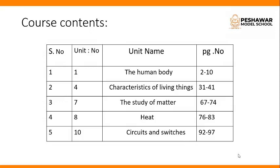We will discuss 5 chapters in this term: Unit 1 the human body, number 2 the characteristics of living things, number 3 the study of matter, unit 4 heat, and unit 5 circuits and switches.